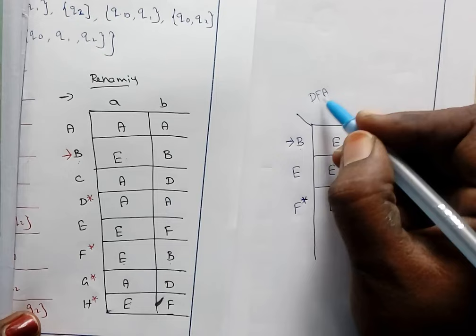This process is called the subset construction method — conversion of an NFA to DFA using subset construction. Thank you.